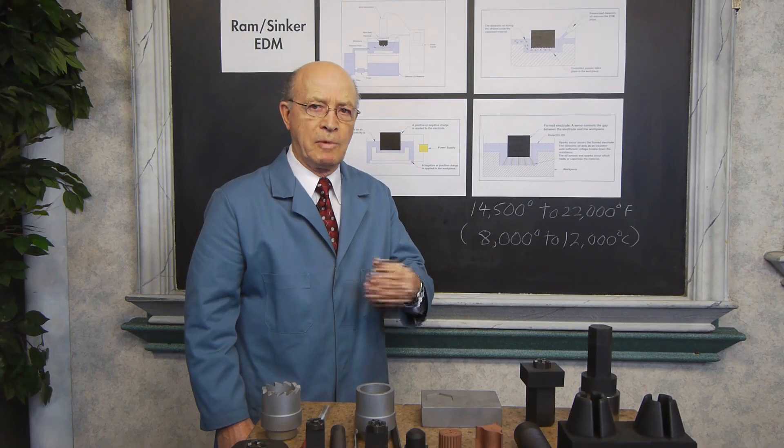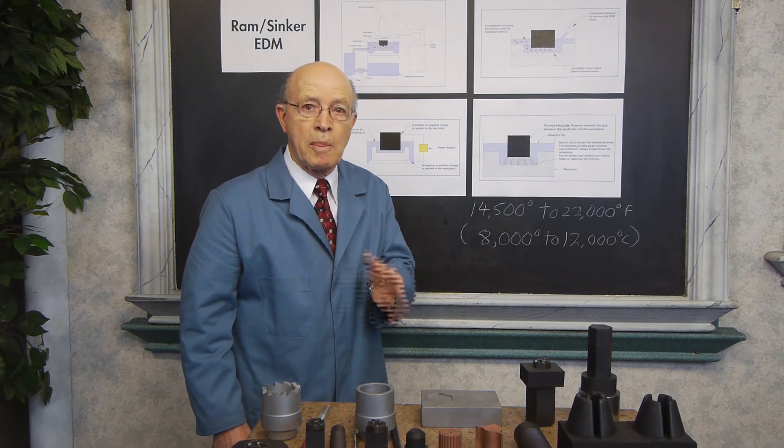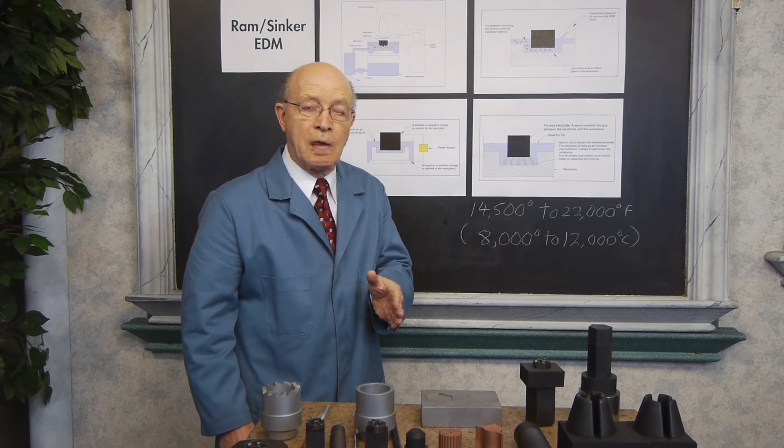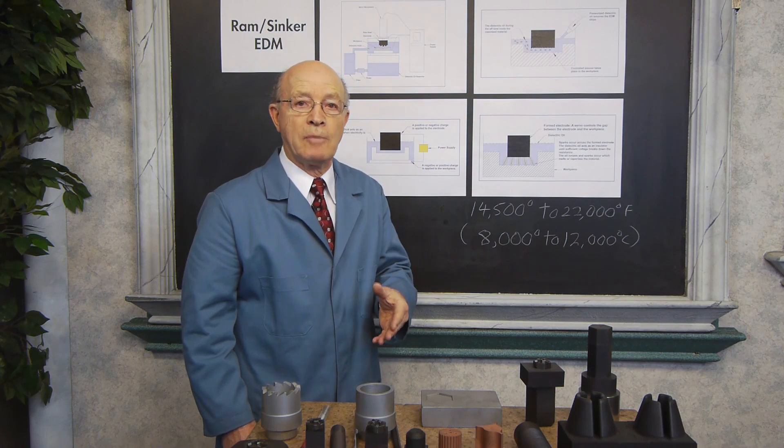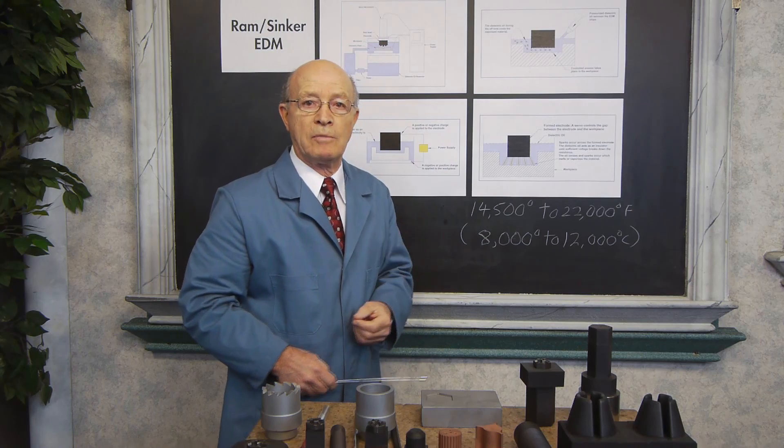There are two cycles in RAM EDM. There's the on time when many sparks occur, but between every on time, there's also an off time. Let's look at this diagram now and see what happens during the off time.